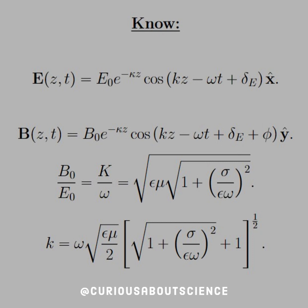All right, what we need to know: plane waves have the form E equals E naught E to the negative kappa Z cosine kz minus omega t plus delta E X hat. B equals the same thing, B naught, which was E naught over C, everything the same except we have delta E plus phi, so that's the total phase angle in the y direction.